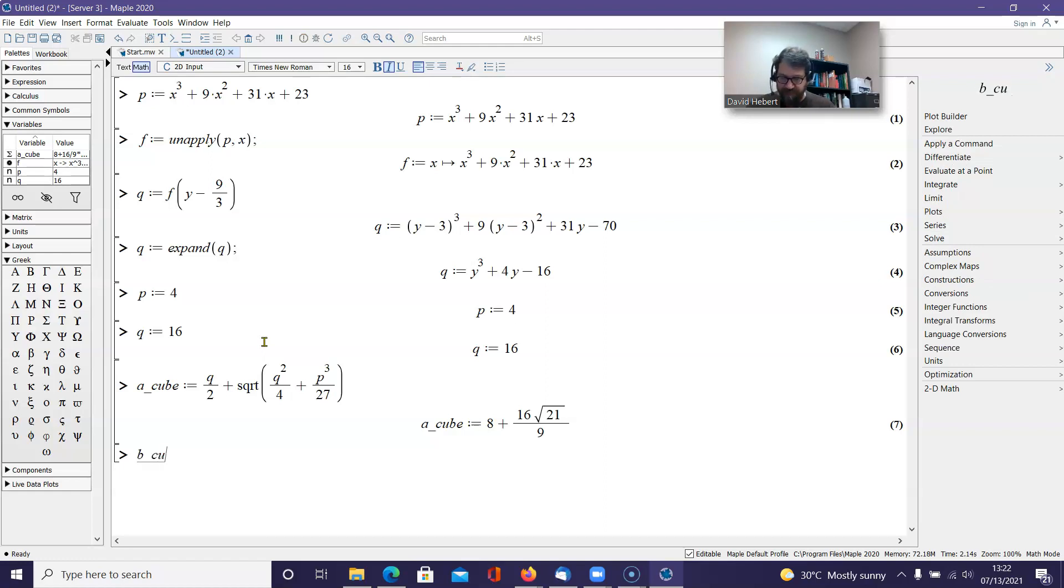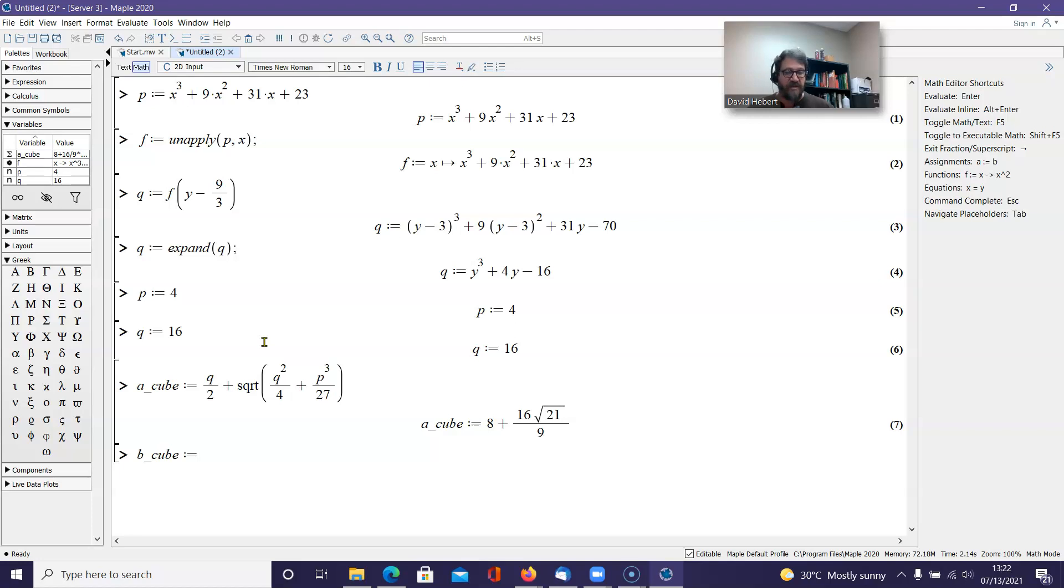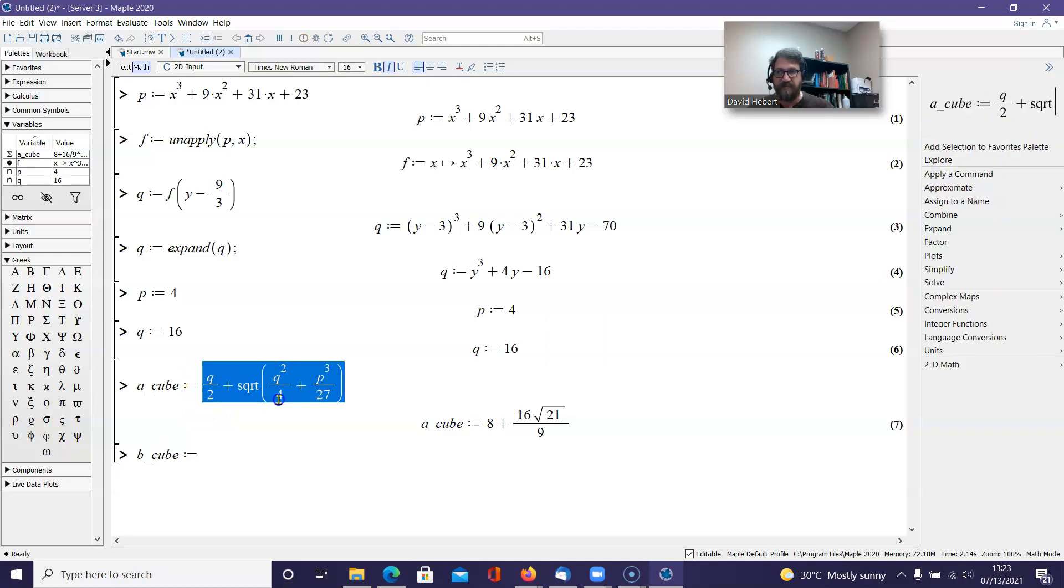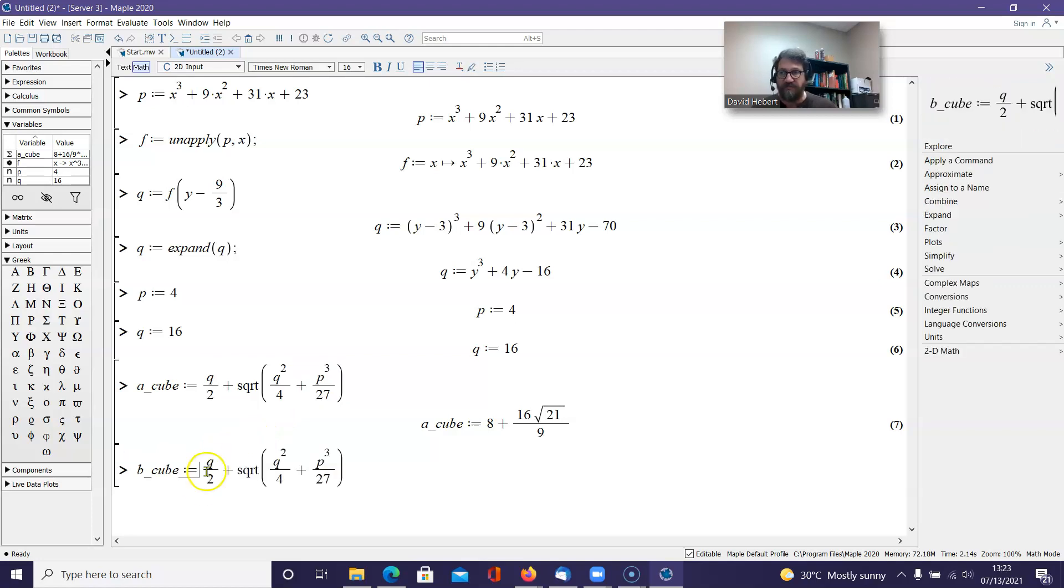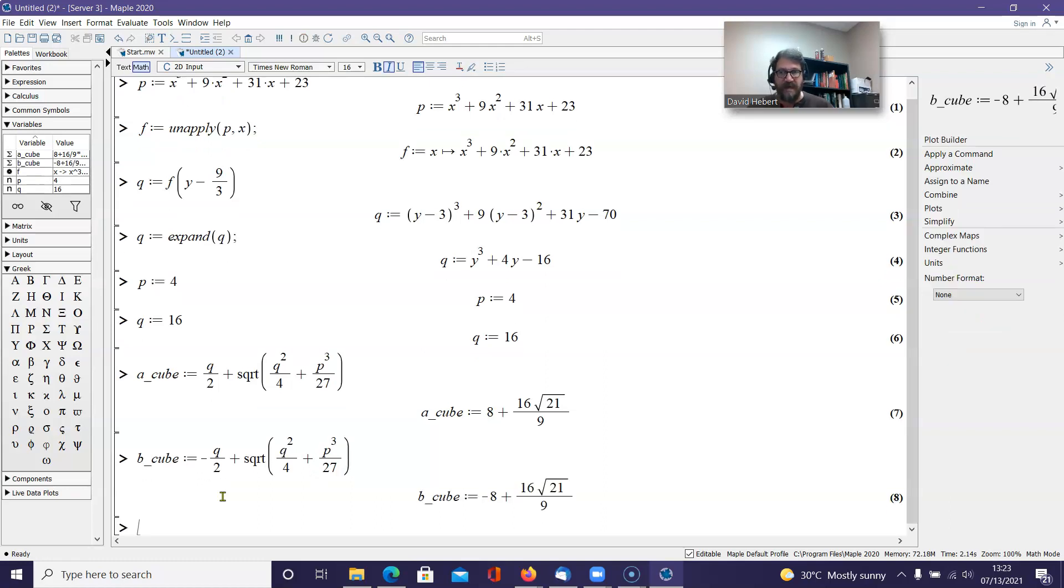And then we're going to have b cubed. And b cubed is the same thing as a cubed, except it has a negative in front of the first term. So what I'm going to do is simply copy by doing control C and drop it down here doing control V. But before I go too far, I've got to remember to put the negative sign in. And when I hit enter, I get b cubed.